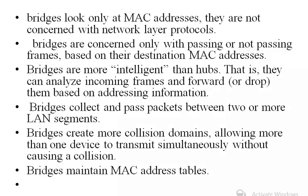Bridges are more intelligent than hubs — a hub is a dumb device while a bridge can analyze incoming frames and forward or drop them based on MAC address information. Bridges collect and pass packets between two or more LAN segments and create more collision domains, allowing more than one device to transmit simultaneously without causing a collision. Bridges also maintain a MAC address table.